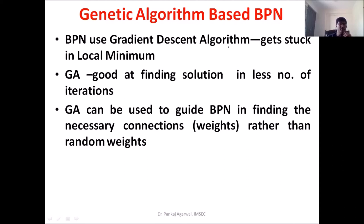If you have studied neural networks, you would know about the local minima and global minima problem. BPN often reaches a local minimum and declares it as the global minimum — essentially declaring a false result as the actual result. This local minima problem is a major issue of BPN. This can be handled by replacing the weight determination method with GA, since GA is very good at finding optimized solutions in fewer iterations, enabling a more effective search.